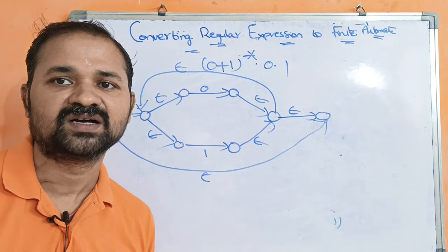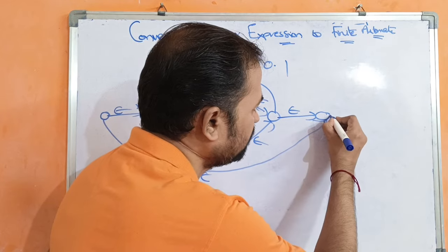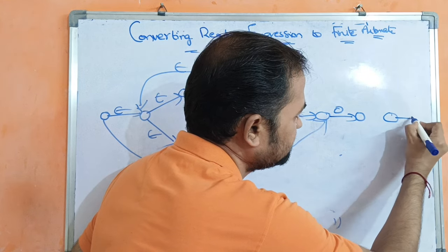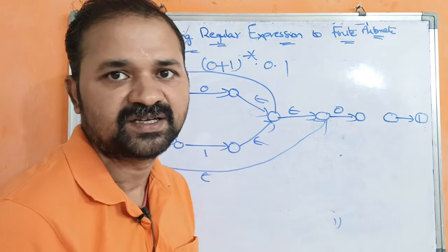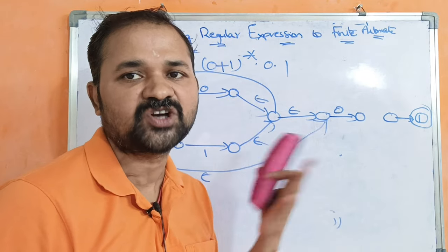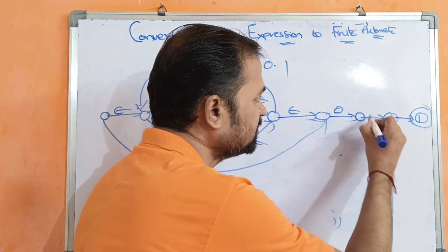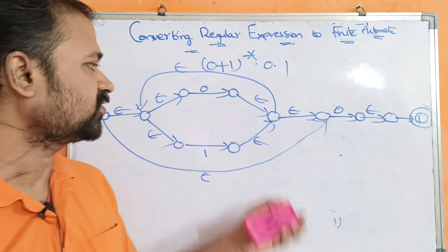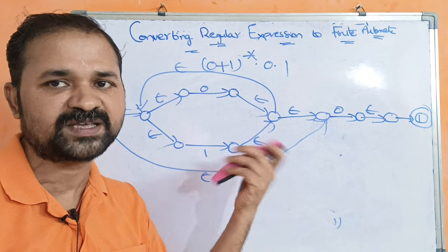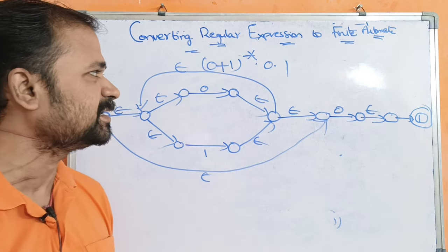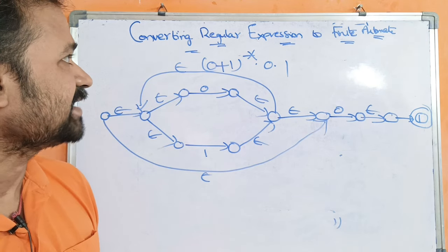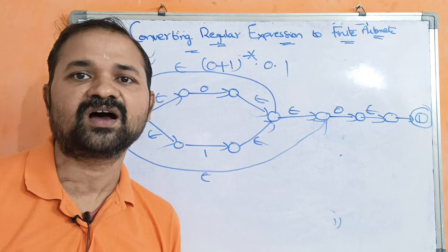Next we need to have 0 and 1. We apply 0 on this state so that we can move to another state, then apply 1 on this state so we can move to another state. This last state becomes the final state. The dot here means concatenation operation, so between these we have to apply epsilon. It is better to write this in four steps: step 1 represent 0 plus 1, step 2 represent (0 plus 1) whole star, step 3 represent 0 and 1, and step 4 concatenate them. So like this we can convert a regular expression into finite automata.